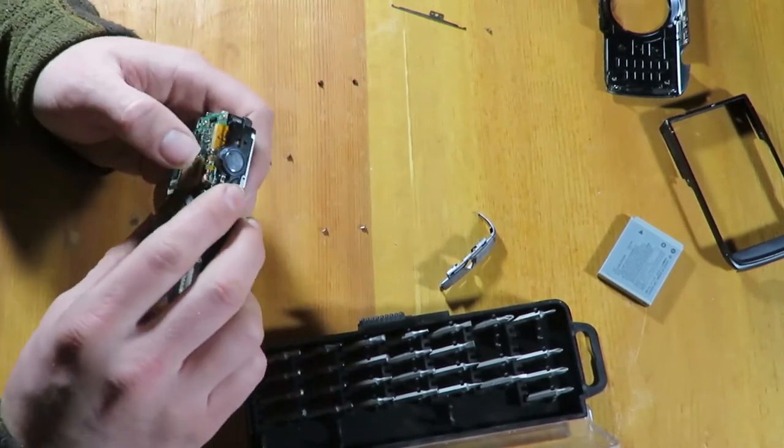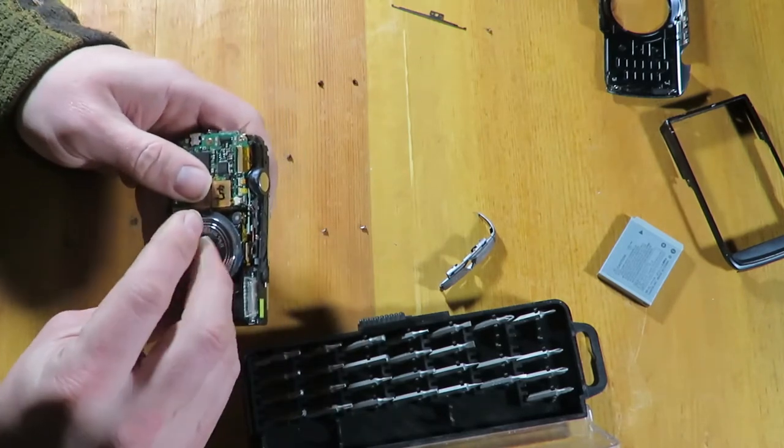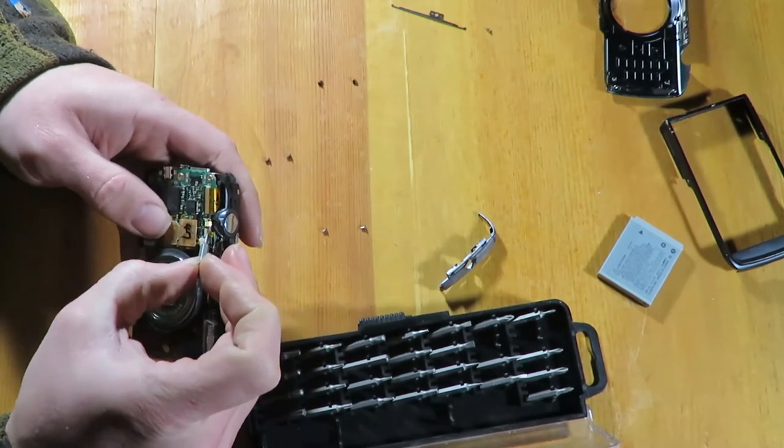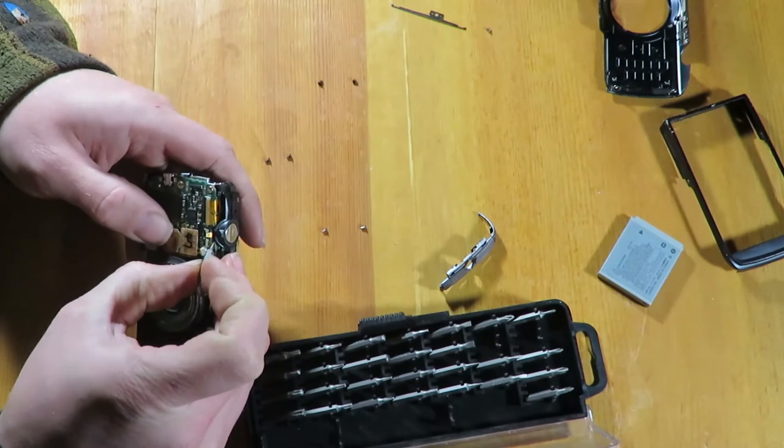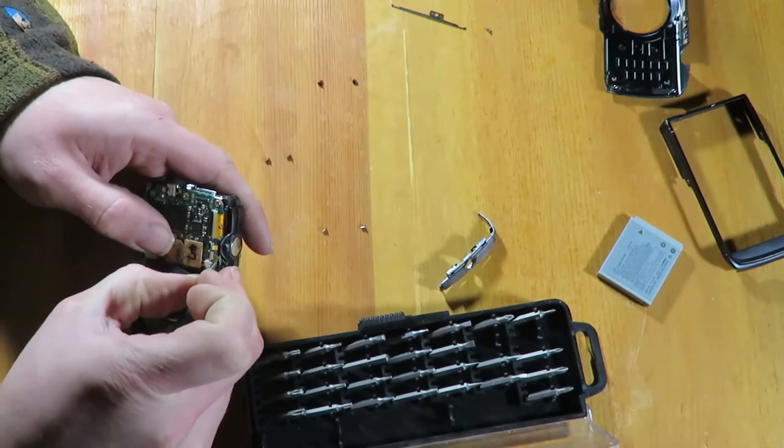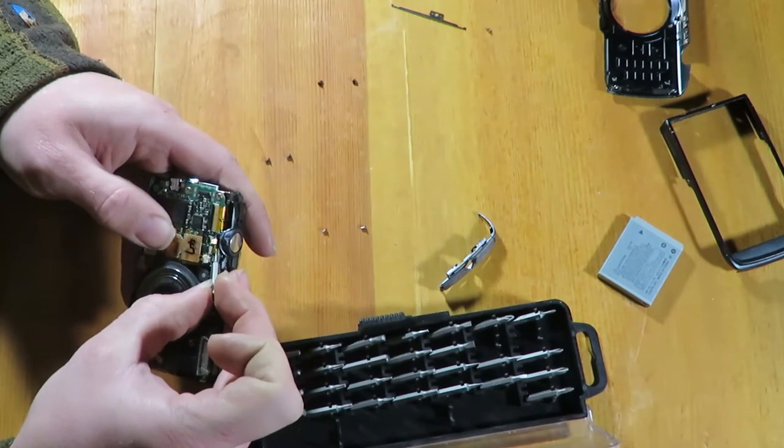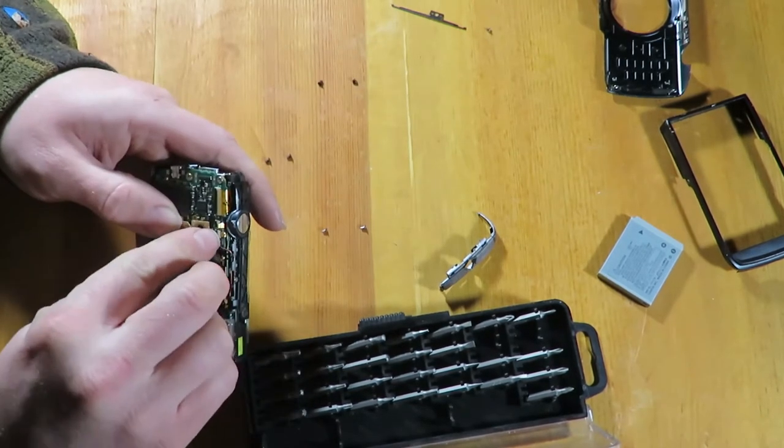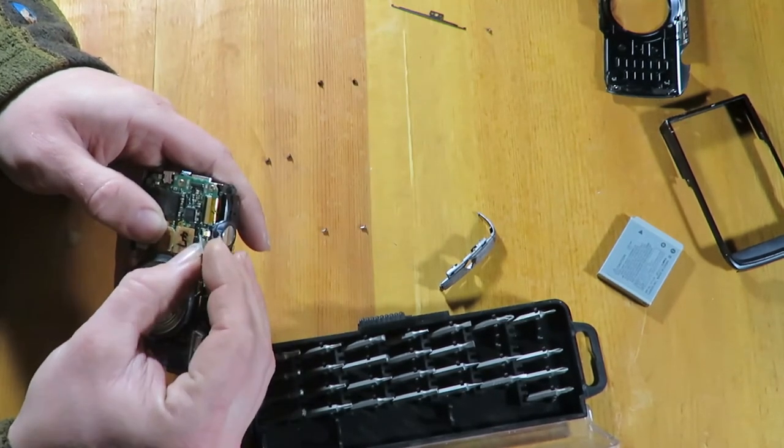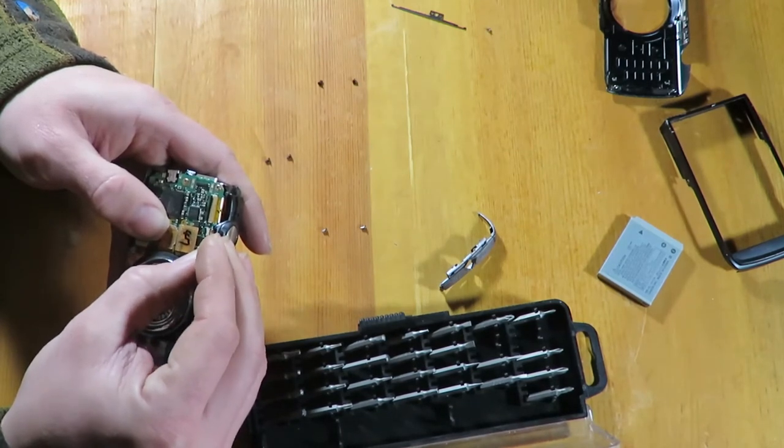So then we'll go ahead and reconnect the flex cables into their sockets. Be sure that the black plastic tabs are still flipped up. Then we want to lay the flexes into the channel and push them in with the small pin hole that they put in the back of the flex. When you can't see any of the shiny contacts, you know that these are in all the way.